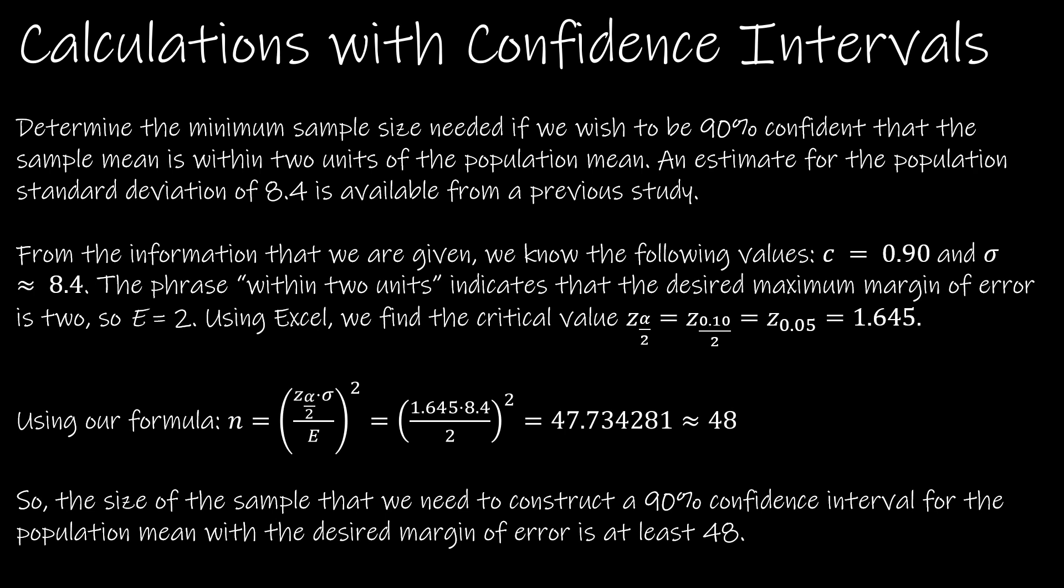So let's do an example now. Let's say we are trying to determine the minimum sample size needed if we wish to be 90% confident that this sample mean is within 2 units of the population mean. Within 2 units means our population mean is going to be in the middle and 2 units to the right or 2 units to the left. And so hopefully we can recognize that this is our E value. This is c, which doesn't tell us much because notice there's no c in this equation. But we know that the confidence level is 90% and the population standard deviation or sigma is 8.4.